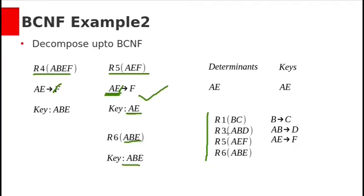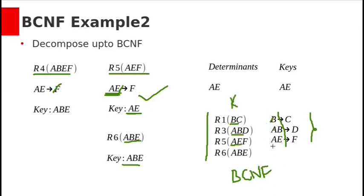The final set of BCNF relations is: R1 with B, C (key B); R3 with A, B, D (key AB); R5 with A, E, F (key AE); and R6 with A, B, E (key ABE). All determinants — B, AB, and AE — are keys in their respective relations. Therefore, the decomposition of R(ABCDEF) into R1, R3, R5, and R6 is in BCNF.